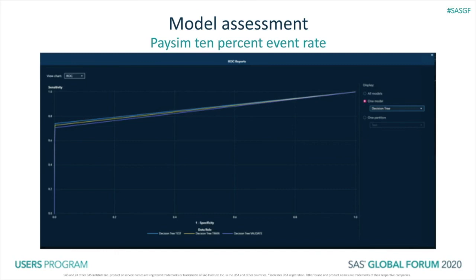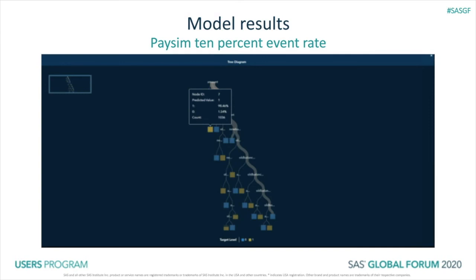Here's a quick screenshot of decision tree results. We captured about 98.4% of fraud within the first few splits of the decision tree — really highlighting the strong result from the decision tree, given the time available in this presentation.